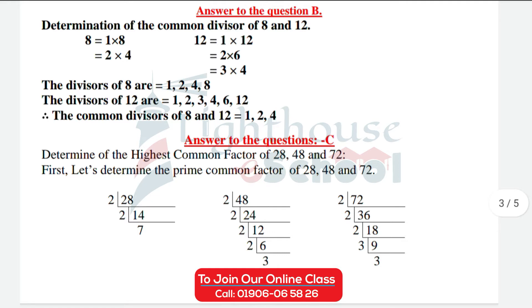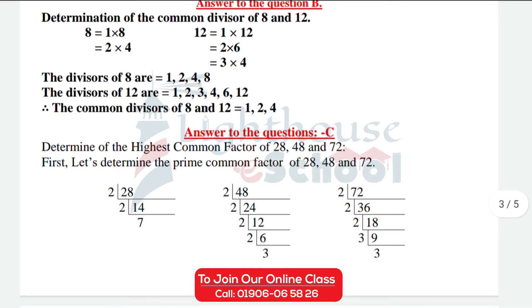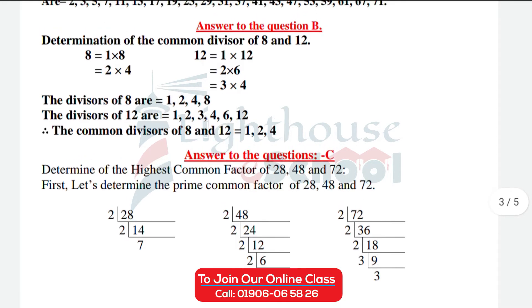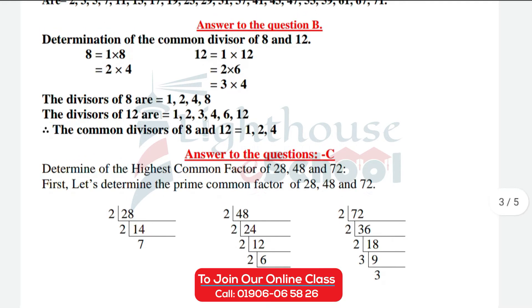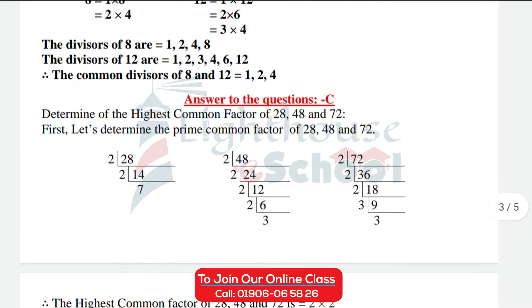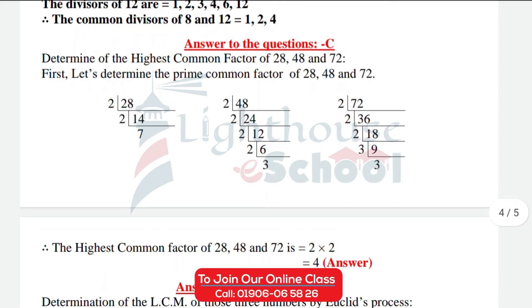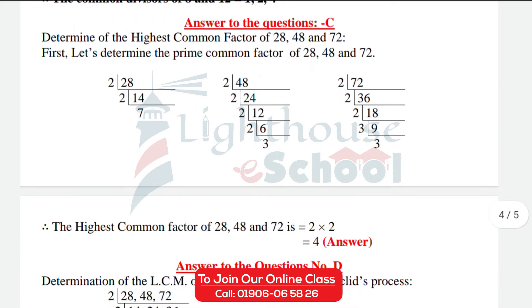The divisors of 8 are 1, 2, 4, 8. The divisors of 12 are 1, 2, 3, 4, 6, 12. The common divisors of 8 and 12 are 1, 2, and 4.